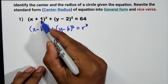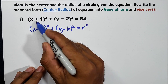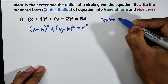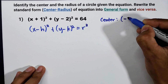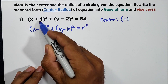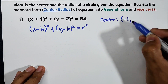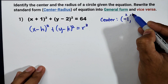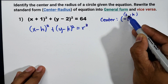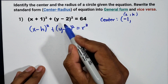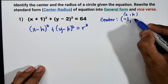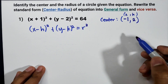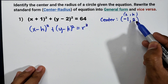h is 1, so we have to find the additive inverse of positive 1, so the center's h-value is negative 1. The additive inverse of positive 1 is negative 1. For the value of k, since k is negative 2, the additive inverse of negative 2 is positive 2. Therefore, the center is negative 1, 2.